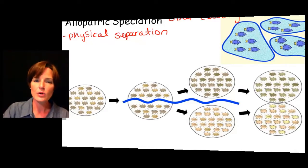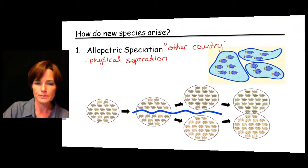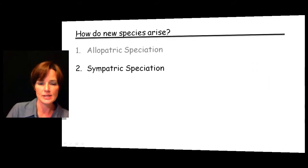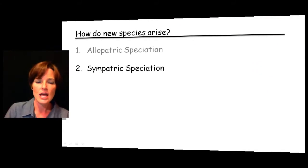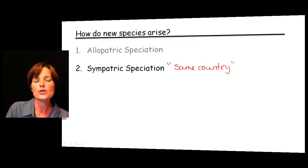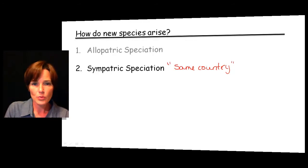That's allopatric speciation — one way that we can get new species to form, and perhaps the most obvious way. We can also have what we call sympatric speciation, where sympatric means 'same country.' In this case, individuals stay in close proximity with one another, but for some reason they're going to stop exchanging genes with each other.